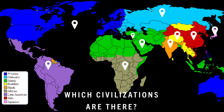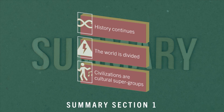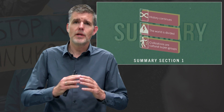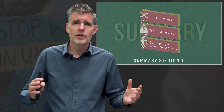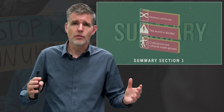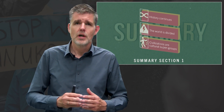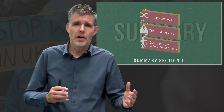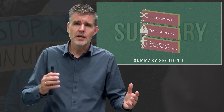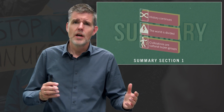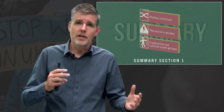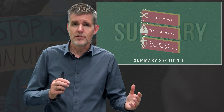And thirdly, those civilizations are cultural supergroups. Is this the ultimate theory which explains conflict and cooperation in the art of international relations? Well, yes and no. So let's discover this by viewing Huntington in the next sections as a policymaker, a historian, and a political scientist. Please join me in section 2.